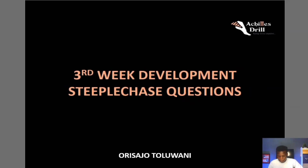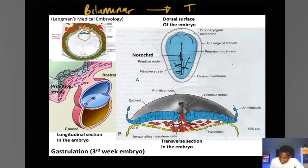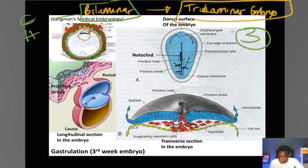From the third week of development, we are proceeding from the level of the bilaminar embryo into the trilaminar embryo. It is the establishment of this trilaminar embryo that takes place in the third week of development. In our second week of development, we already established the epiblast and the hypoblast — the two-layered embryo. Right now in the third week, we are establishing a three-layered embryo.